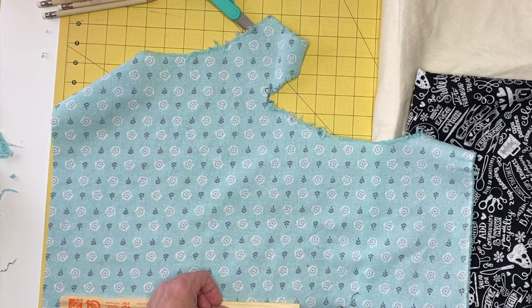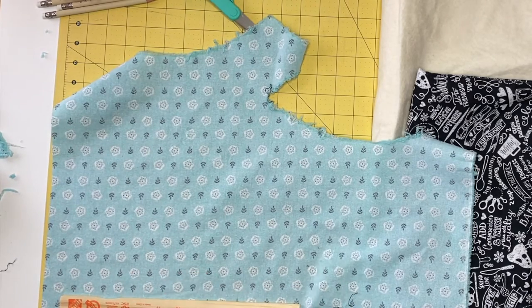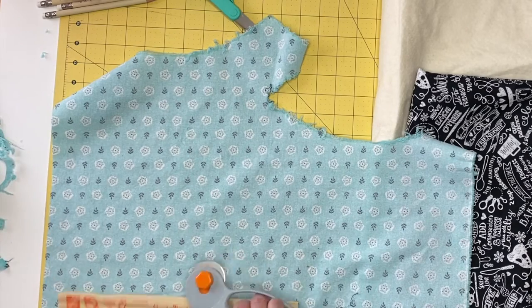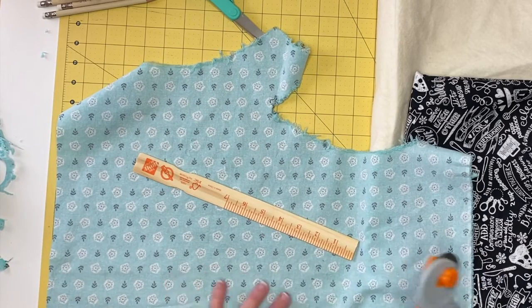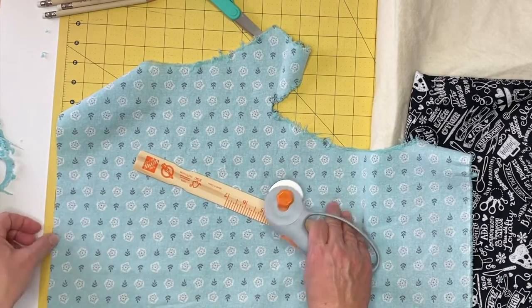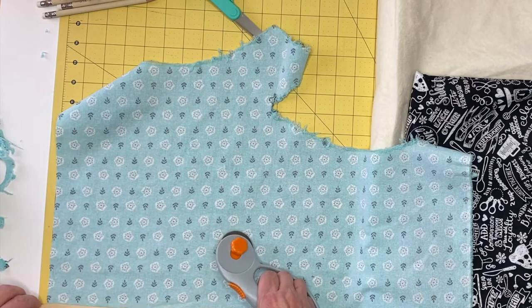You can adjust the size of your squares as well as your darts to match the size of your specific bowl. You can use two different fabrics to make your cozy reversible or have two squares of the same fabric. Whatever you choose will be great.